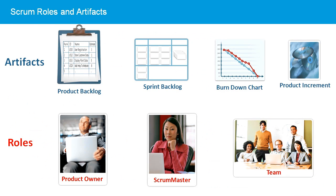Scrum contains three core roles: the product owner, the team, and the Scrum Master. The product owner owns the vision of the product and interacts with the stakeholders to create the requirements held in the product backlog. The product backlog holds the features, bug fixes, and non-functional requirements needed to successfully deliver the completed product. Items in the product backlog are ordered by priority, with the highest priority items at the top.